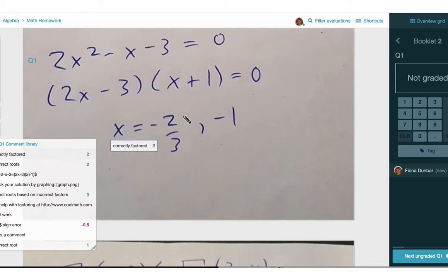I've noticed that it's correctly factored, but there's just one correct root.